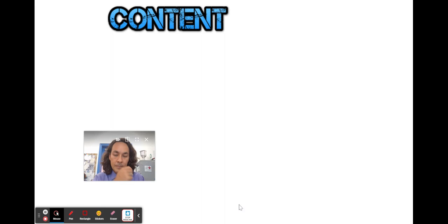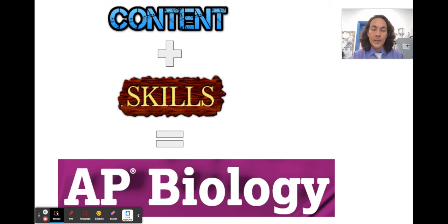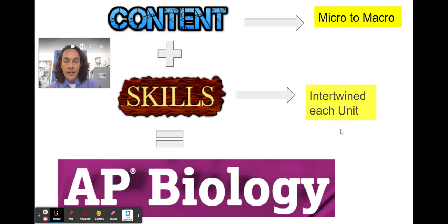AP Biology is not only content, a lot of stuff that you have to know, but more importantly, the skills. And those content and skills equal AP Biology. You can think of skills at TASM as things like the learner profile, we're working on being creative and critical thinkers and inquirers. And here in AP Biology, some of the skills will be a little more science specific. So the content will go micro to macro, and the skills will be intertwined with each unit.